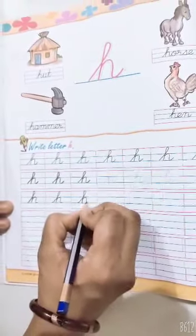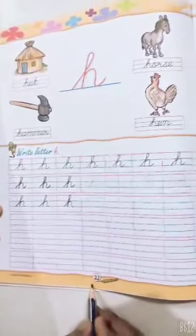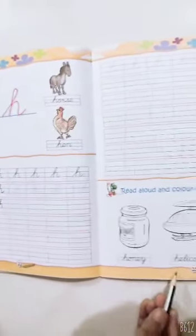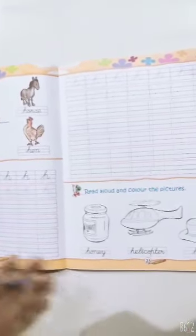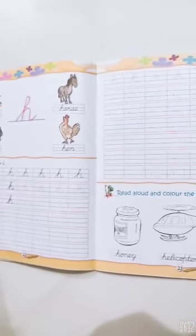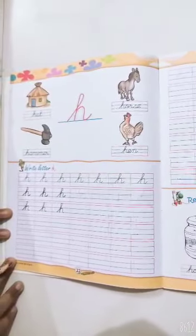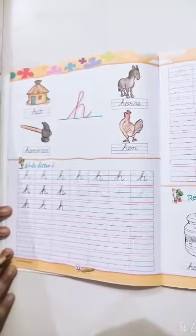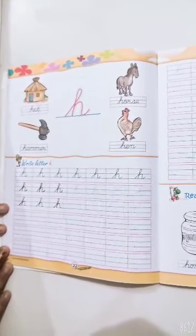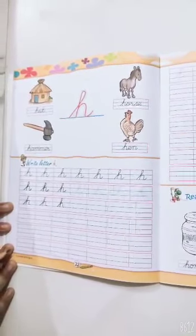Now H is your homework. Page number 22 and page number 23. Two pages is your homework. Do it nicely. Handwriting must be good. Now that's it for today. Bye-bye.